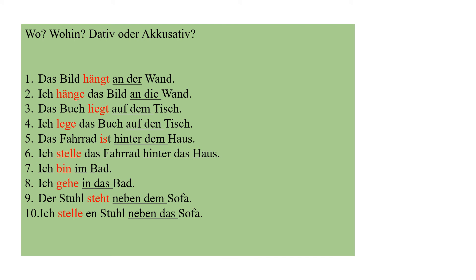We have an exercise here — wo, wohin, Dativ oder Akkusativ. This is your homework. You just have to mention whether it is Dativ case or Akkusativ case. I will do one or two sentences with you and the rest you can solve as homework. By now you know that wo is the question word for Dativ, which is position, and wohin is the question word for Akkusativ, which shows you the action. All nine prepositions can be used either in Dativ or in Akkusativ — what changes is the article depending on the case.